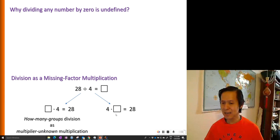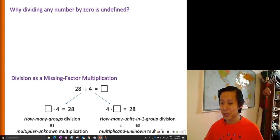The second type of division is the how many units in one group type of division. Here we know there are four groups and we want to find out how many units in each of these four groups such that the total is 28. So in this case, it's the multiplicand unknown type of multiplication.